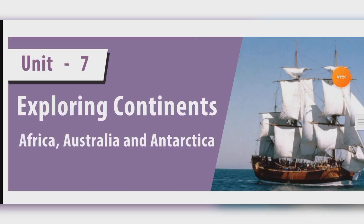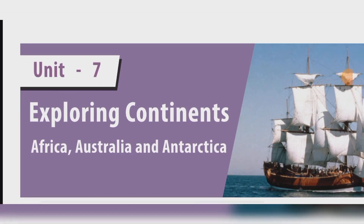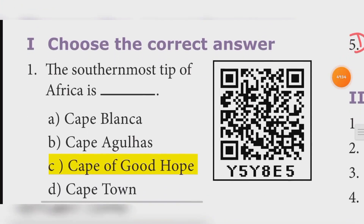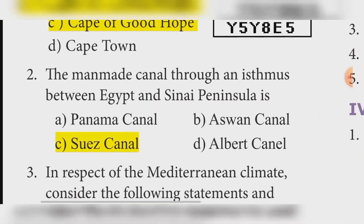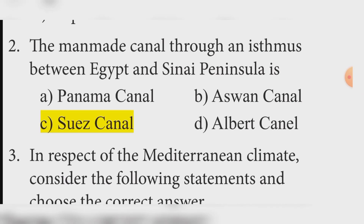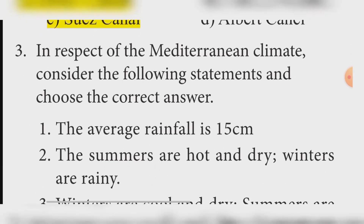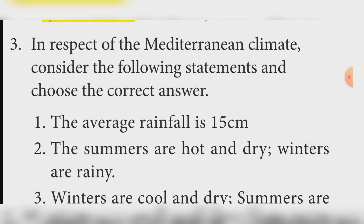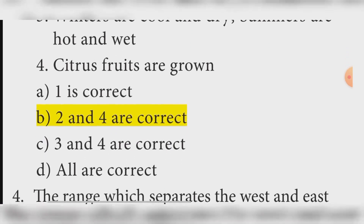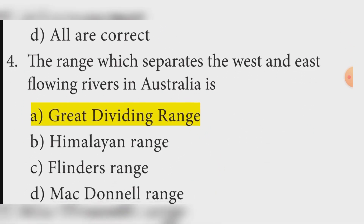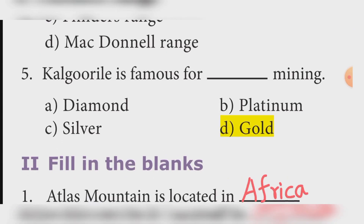Unit 7, Exploring Continents. Choose the correct answer. First: The southernmost tip of Africa is the Cape of Good Hope. Second: The man-made canal through an isthmus between Africa and the Sinai Peninsula is the Suez Canal. Third: In respect of Mediterranean climate, summers are hot and dry, and winters are rainy — Option B, statements 2 and 4 are correct. Fourth: The range separating west and east flowing rivers in Australia is the Great Dividing Range. Fifth: Kalgoorlie is famous for gold mining.